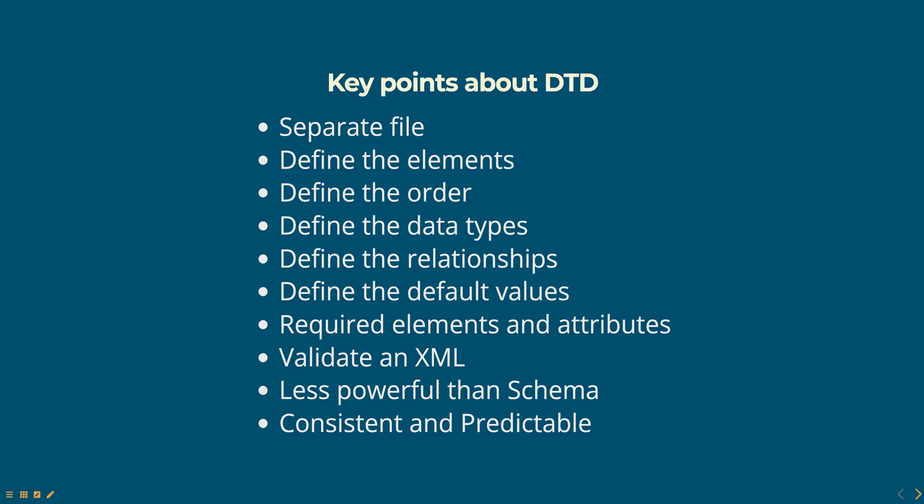DTDs can be used to specify which elements and attributes are required in an XML document and which are optional. DTDs are used to validate an XML document against a set of rules defined in the DTD. If the XML document does not conform to the rules defined in the DTD, it is considered to be invalid.